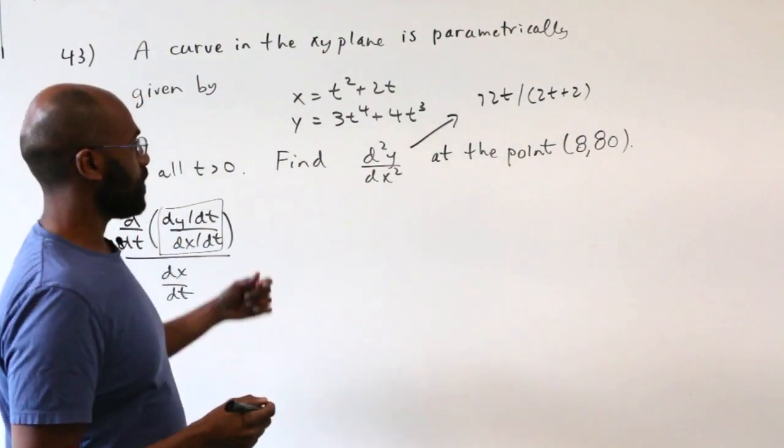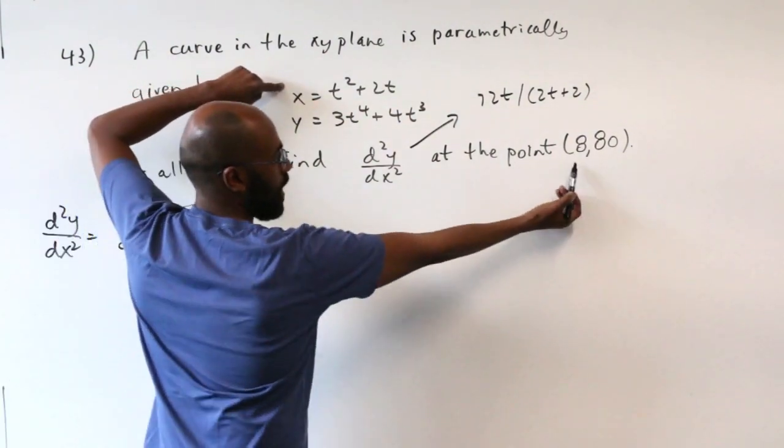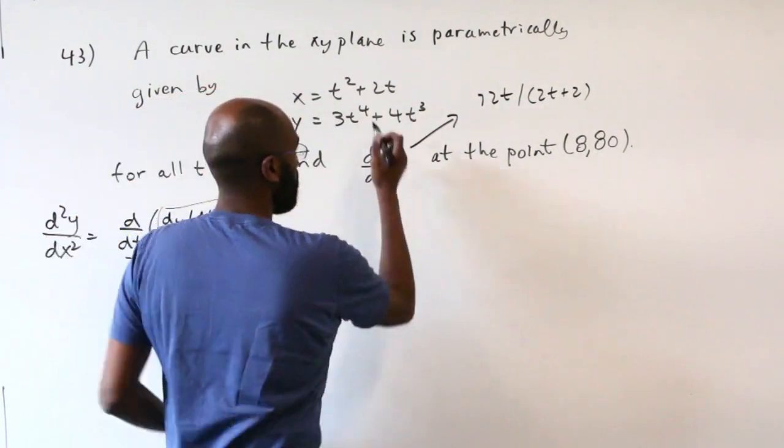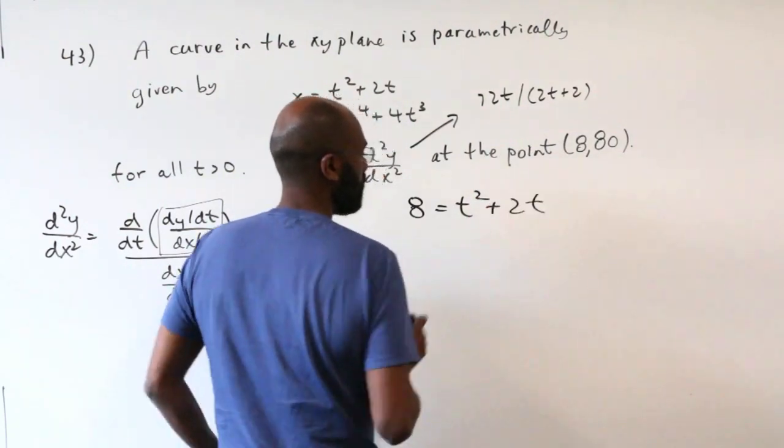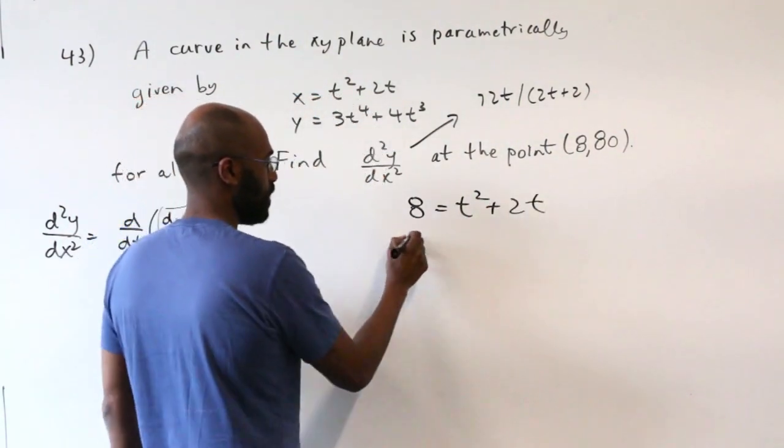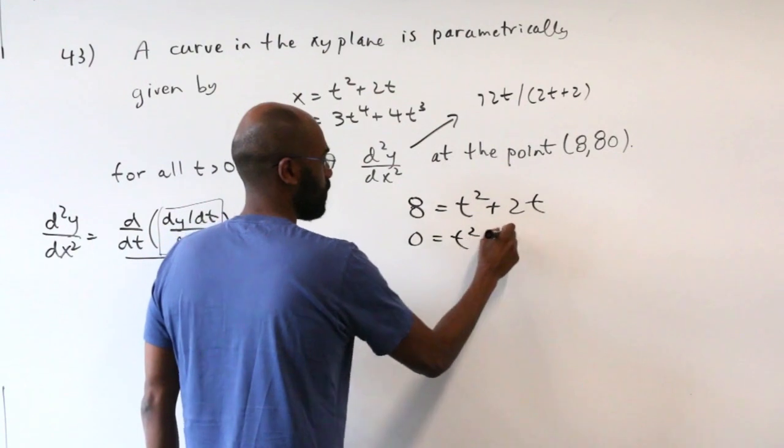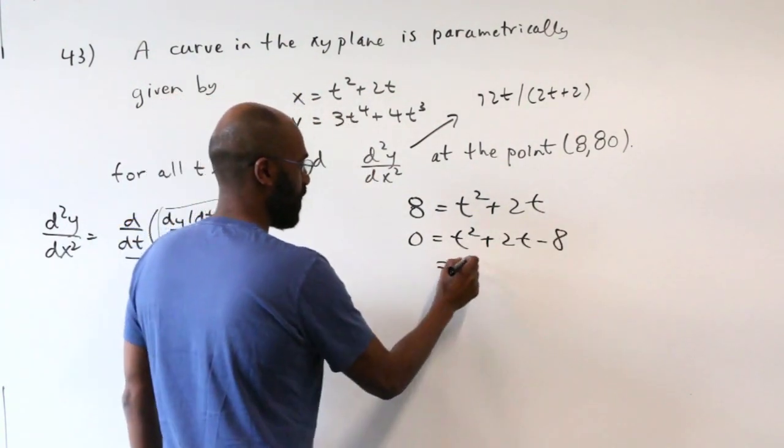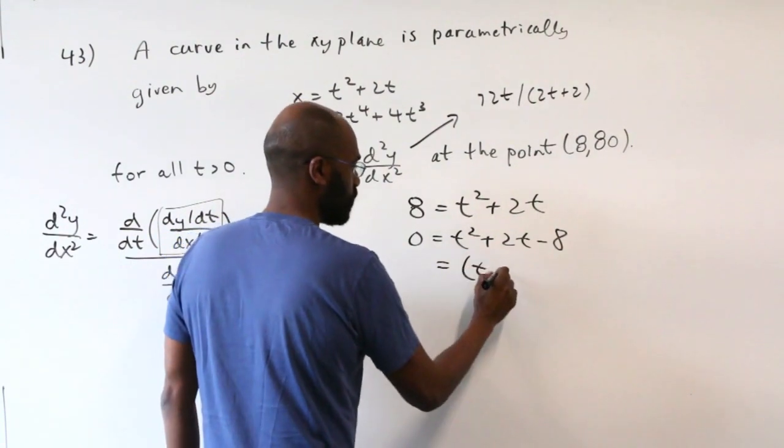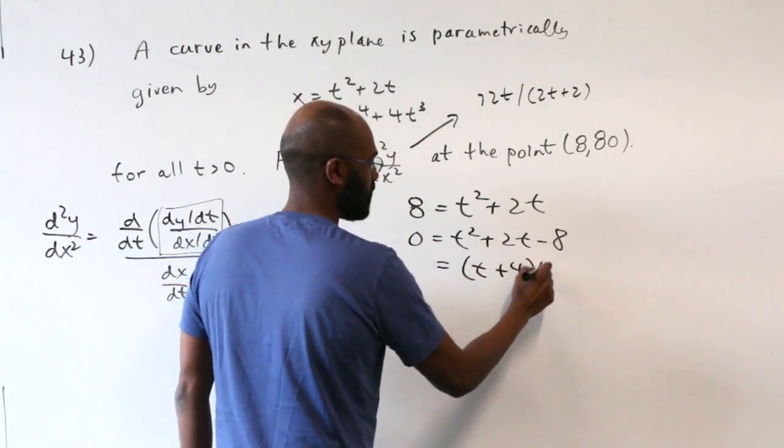If we rearrange, we get t² + 2t - 8 = 0, which we can factor the right hand side into (t + 4)(t - 2). Okay, so the values of t that work here are t = -4 and t = 2, but t is strictly positive, so we have to take the value t = 2.